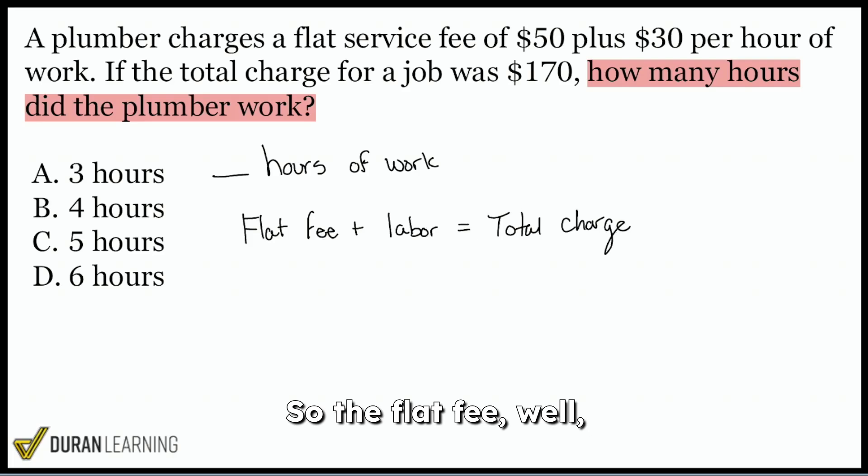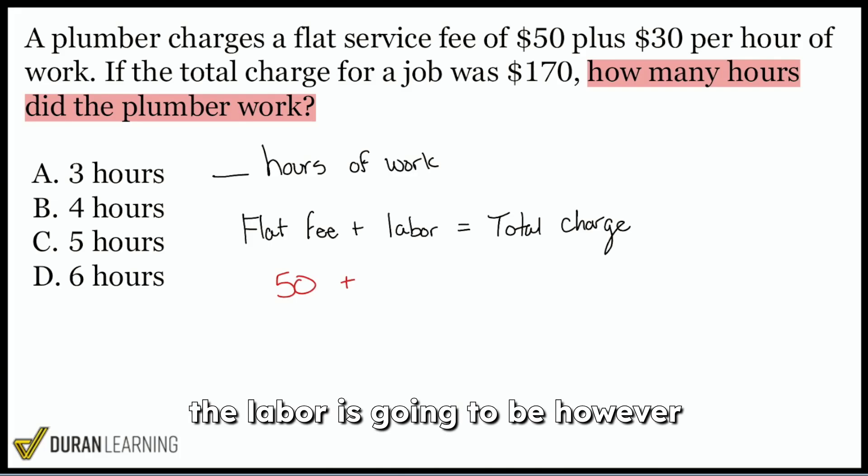Remember, when you're creating equations, what you're really doing is you're making sense of the context of the English. And that's what we've done here. So the flat fee, well, that's the $50 right here. Flat service fee of $50. So I'll write that in. $50 plus, how do we calculate the labor? Well, the labor is going to be however many hours this plumber worked, multiplied by that hourly rate, which is $30 per hour. So for example, if the plumber works two hours, that's $30 times two. And then we add on that flat fee.